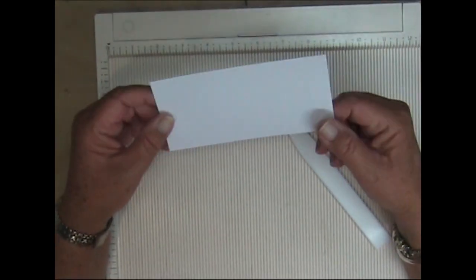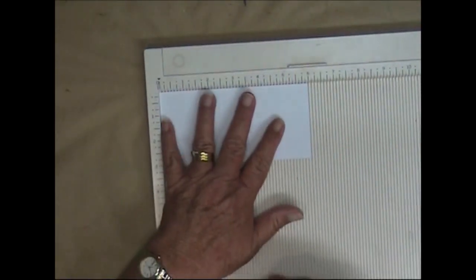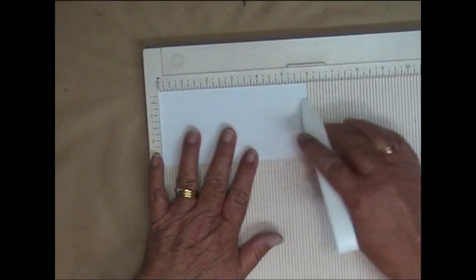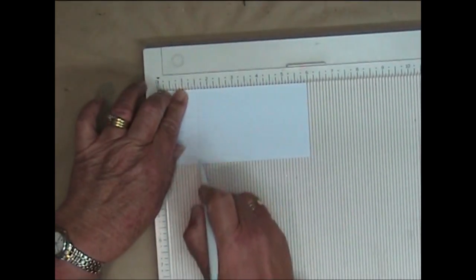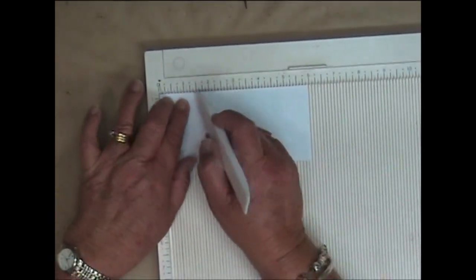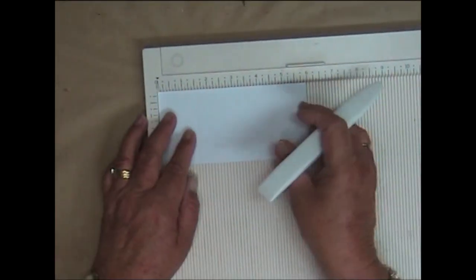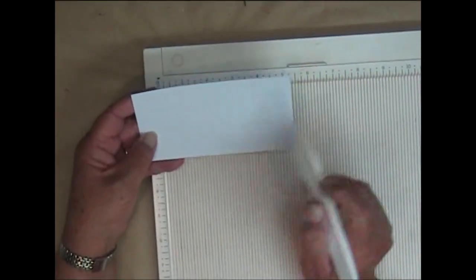We need to score all of these by placing your cardstock with the longest side sitting at the top of your scoreboard and score it at one and a half inches both ends. So rotate it, turn it right over and do that. So basically just one and a half inches in on both sides.